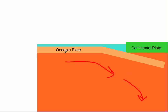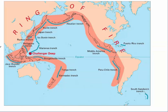Whenever we have a subduction zone, there are a few common features. One is a deeper area of water known as a trench — trenches are the deepest places on planet Earth. Specifically, the Challenger Deep is part of the Marianas Trench, which is a subduction zone just off the coast of Japan.